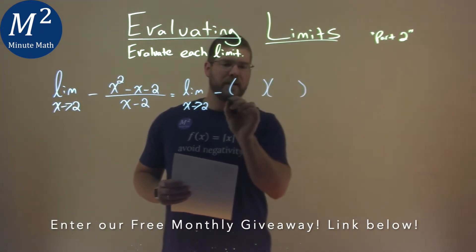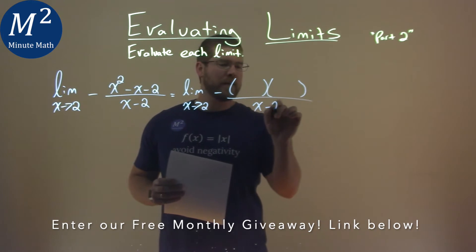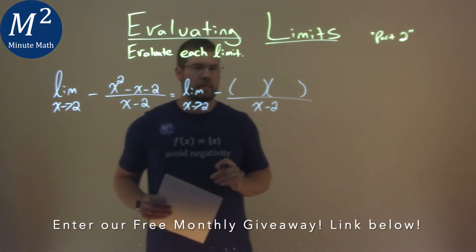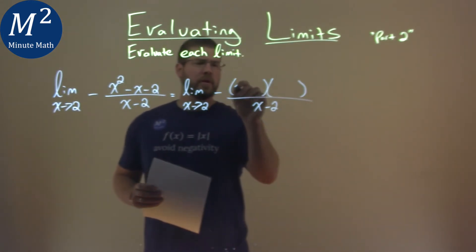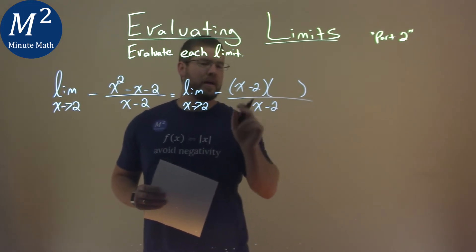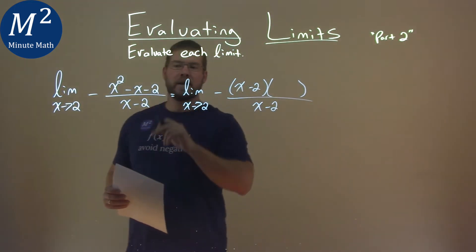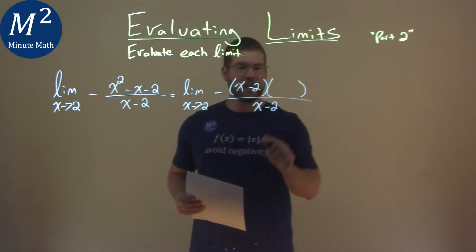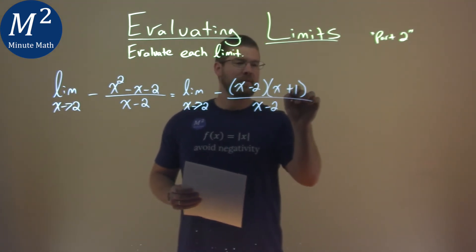Okay, and most likely, in most of these cases, it'll factor to be something that cancels out in the denominator. Well, we factor the numerator, and I'm going to go ahead and just put that there. What two numbers multiply to be negative 2, but add to be a negative 1? x minus 2, and x plus 1.